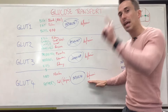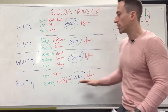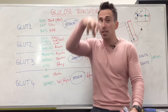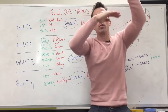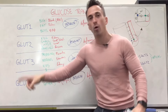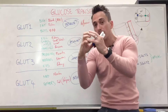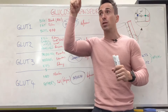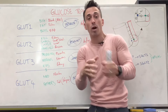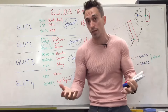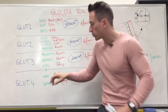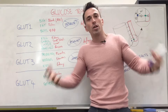For GLUT-4, this transporter actually sits inside the cell. For all the others, it spans across the entire membrane, taking glucose from outside and moving it inside. GLUT-4 isn't in the membrane — it's inside the cell. When insulin comes along, it triggers GLUT-4 to move to the membrane to then pick up glucose. This is why when people don't produce insulin due to Type 1 diabetes, no GLUT-4 comes to the surface — you have reduced numbers of GLUT-4, the muscles can't take up energy, and you get very tired.